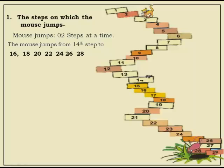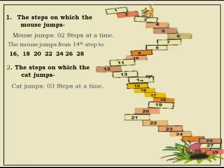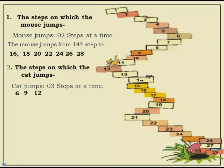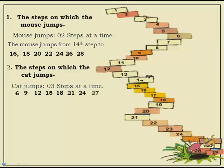Now let's see which steps the cat lands on. The cat starts on the 3rd step and jumps three steps at a time, so it will be on: 6, 9, 12, 15, 18, 21, 24, 27. There are only 29 steps, so the cat's last step is 27. This is essentially the three-times table.